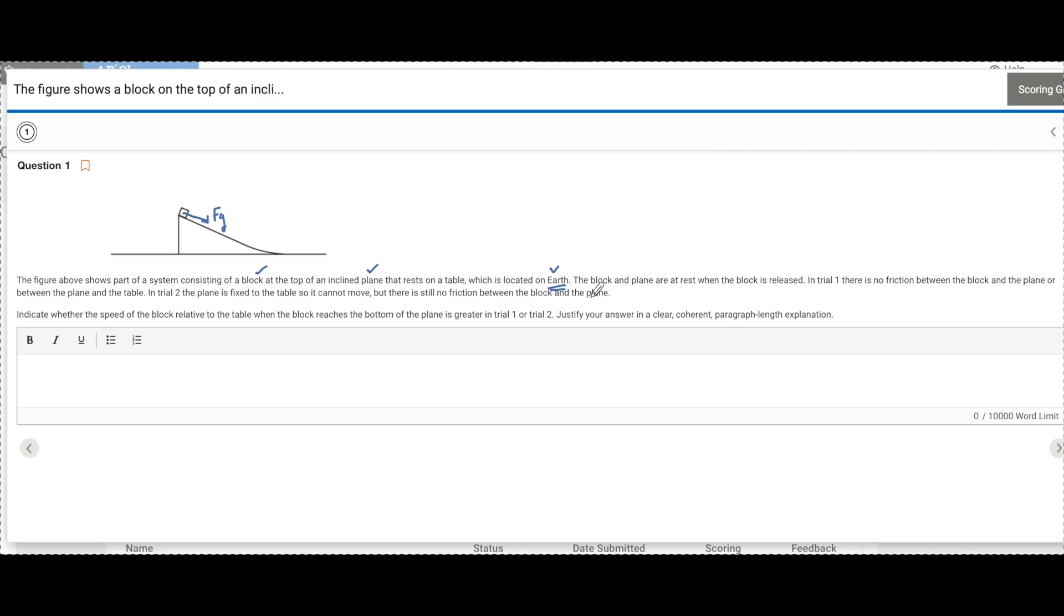Now essentially in the first trial, the block and the plane are at rest when the block is released. But in this first trial, there's no friction between the block and the plane or the plane and the table. So we'll call this one trial one. And then over here, I'm going to set up trial two.